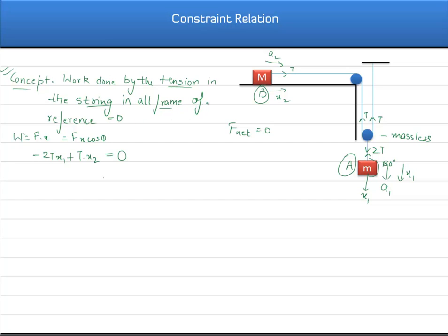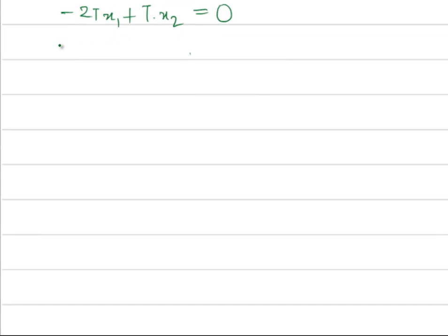This should be equal to zero. Now if we solve this equation we will get T into x2 should be equal to 2T into x1, or this will give us x2 should be equal to twice of x1.